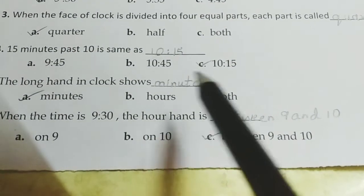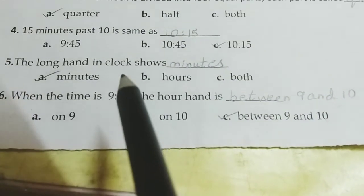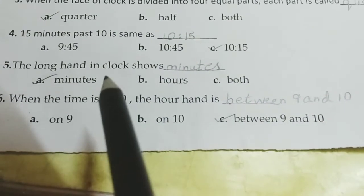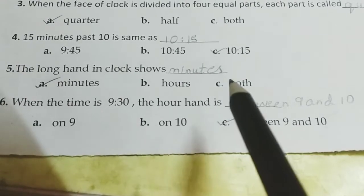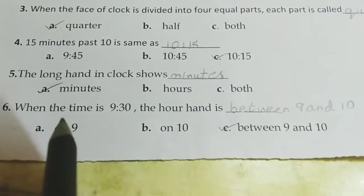The long hand is, the long hand in clock shows dash. Long hand shows hours, minutes, both. What it shows? It shows minutes.